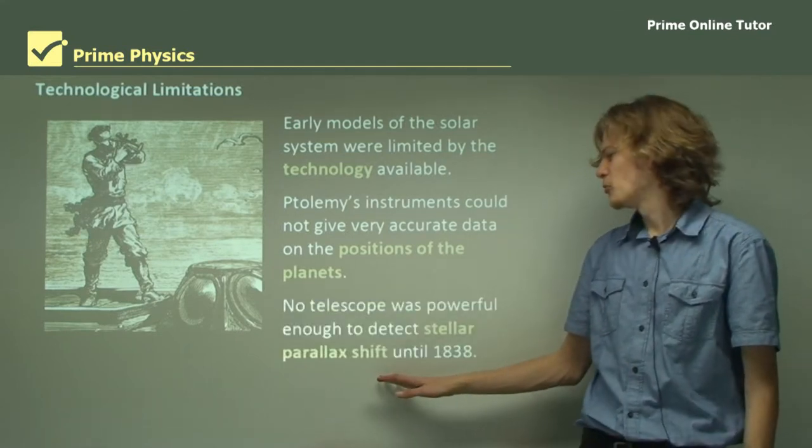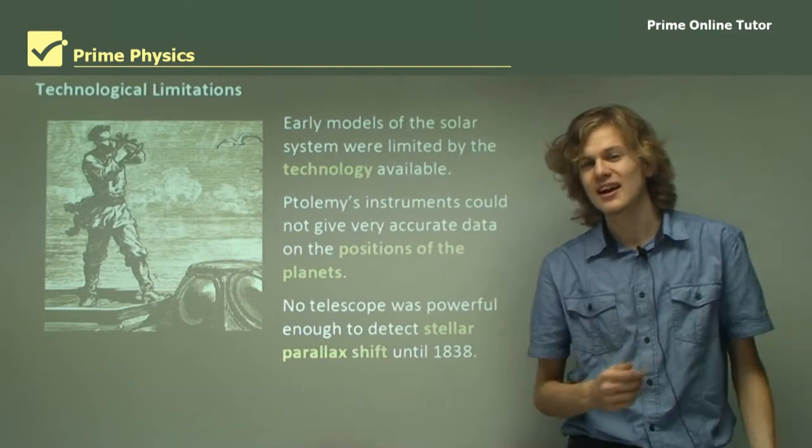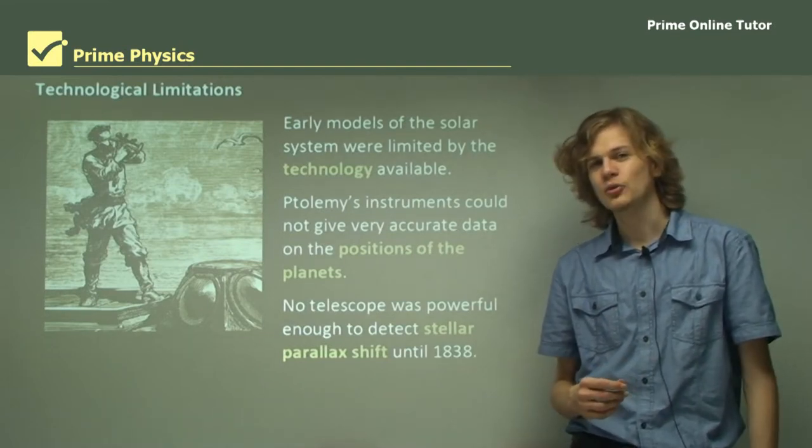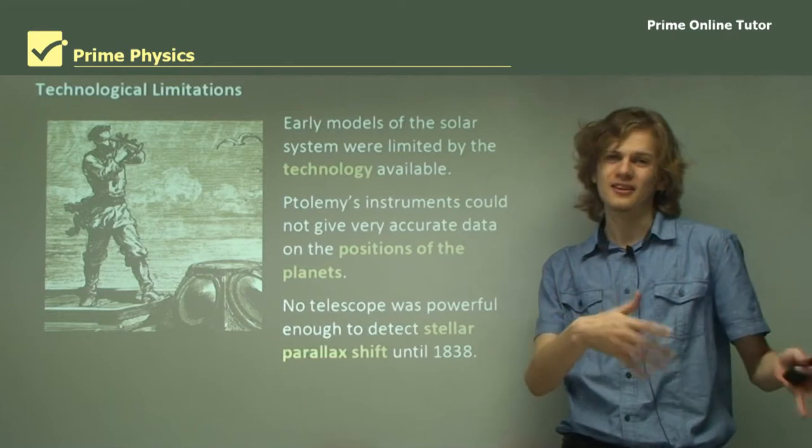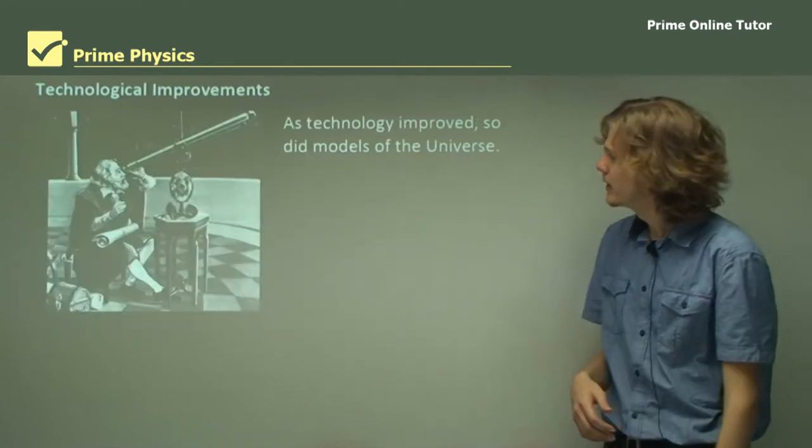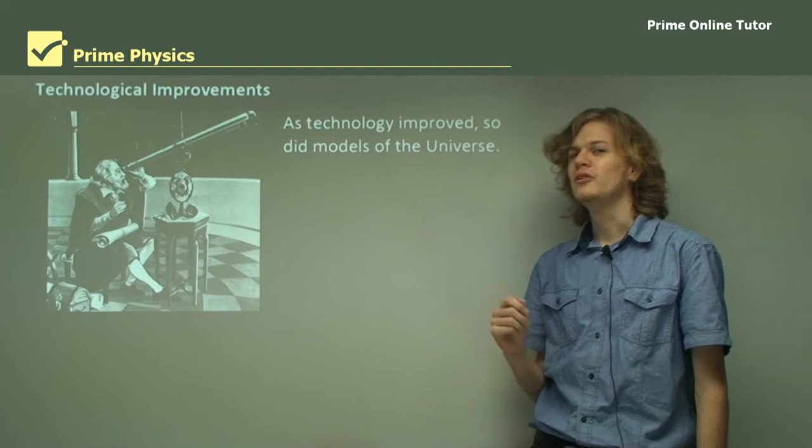No telescope was powerful enough to detect, for example, stellar parallax until 1838. So stellar parallax could never be detected until then. Now, as technology improved, so did models of the universe.